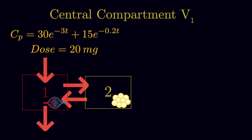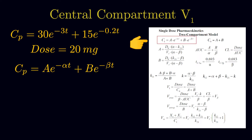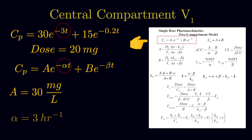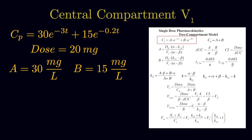The first question is asking what is the volume of distribution of the central/plasma compartment. We will be using the equations on our formula sheet under a single-dose pharmacokinetics two-compartment model. First we will define some variables: A is 30, alpha is 3, B is 15, and beta is 0.2.